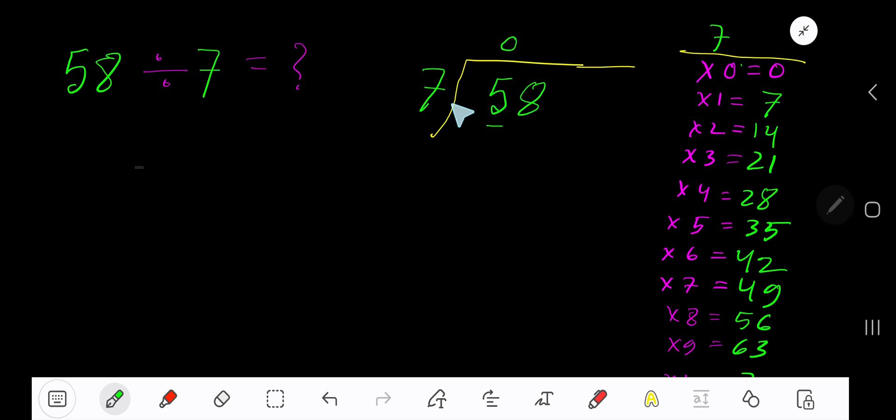0 times, as 5 is less than 7. 0 times 7 is 0. Subtract 5 and bring down the next digit. 7 goes into 58 how many times? 8 times.